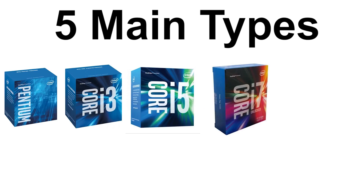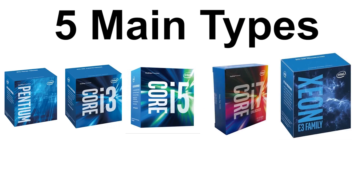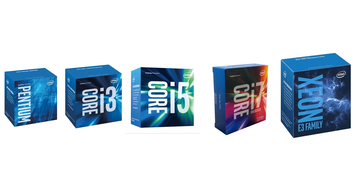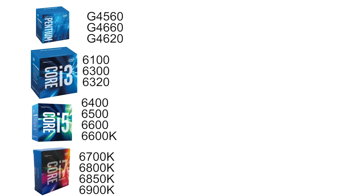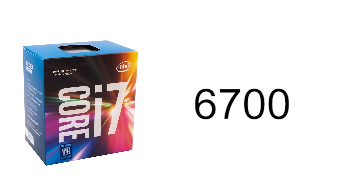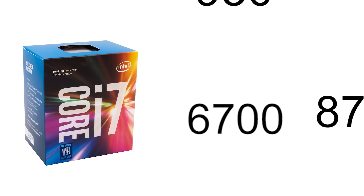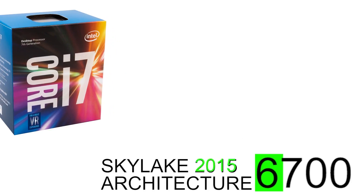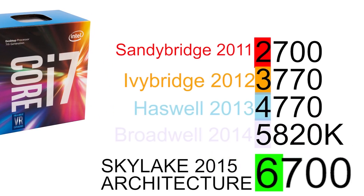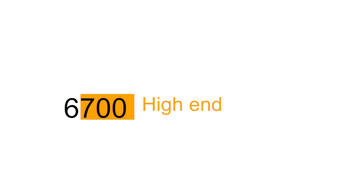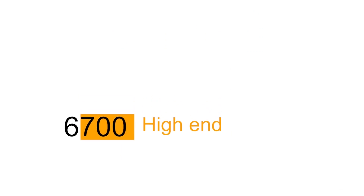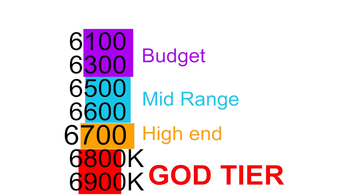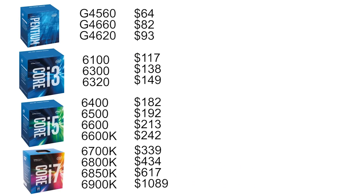Pentium, i3, i5, i7, and Xeon processors — focusing on current processors for average consumers. Most recent processors have four numbers; older ones have three. The first number is the architecture, or how modern the processor is. Pentium doesn't apply. The last three numbers indicate how good the processor is — the higher the better.